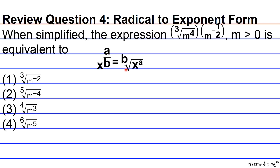So b becomes the index of the root, and the numerator of the exponent becomes the exponent of the radicand. Another way of expressing this is to extract the exponent from the radicand. This form can work out better when x is a large number — finding the root first and then raising to exponent a keeps the numbers smaller on a relative scale.